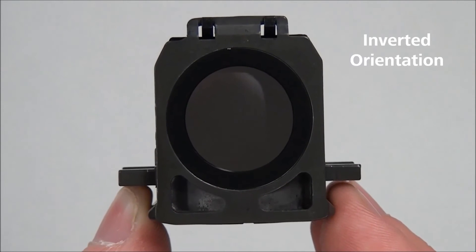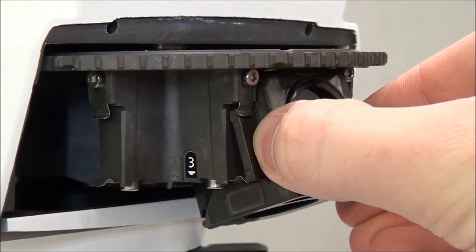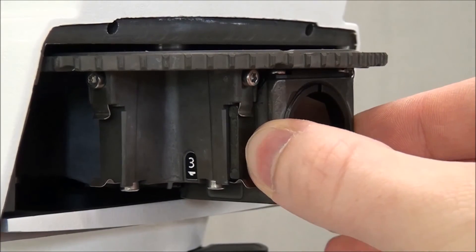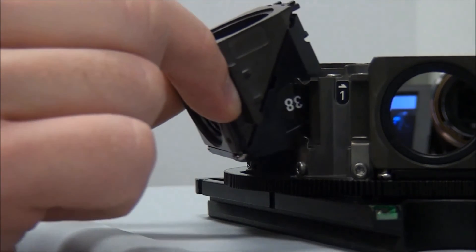On an upright microscope, insert the top edge first under the metal clips, and then tilt the lower edge into place until you hear a click. On inverted microscopes, start with the bottom edge and tilt in the top edge until you hear the click.